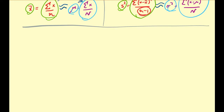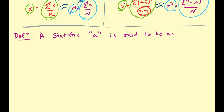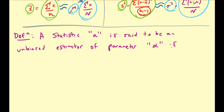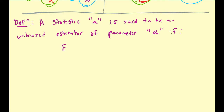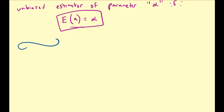Let me quickly give a definition for something we will use. A statistic — which will take the place of our sample mean and sample variance — is said to be an unbiased estimator of parameter alpha, where alpha takes the place of mu and sigma-squared, if one property is satisfied: namely, the expected value of A equals alpha. If the expected value of a statistic equals that parameter, we can use that statistic to estimate the parameter in an unbiased fashion.